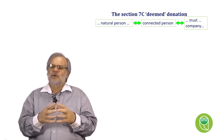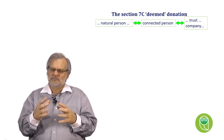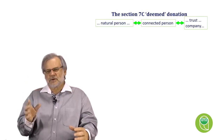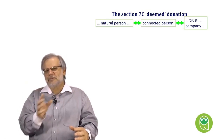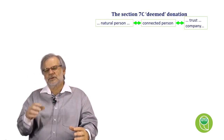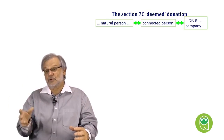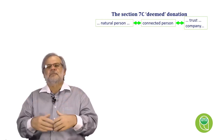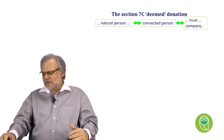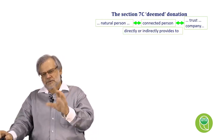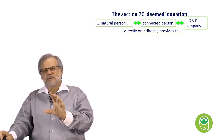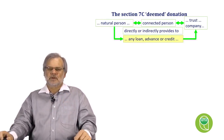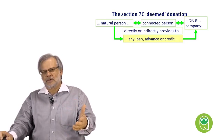The natural person will be a connected person in relation to the trust when the beneficiaries are family members of the natural person within the third degree of consanguinity — so spouse, children, etc. Section 7C applies where the natural person directly or indirectly provides to a trust or a company any loan, advance, or credit.